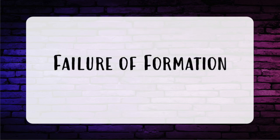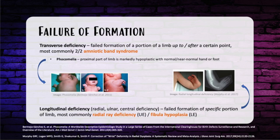Starting with failure of formation — there are two ways you can stop forming. One is transverse deficiency, think congenital hand amputations. The most common site is the proximal one-third of the forearm. Another example is phocomelia, a truncated limb associated with the thalidomide drug. The second group is longitudinal deficiency, related to which bones are missing: radial deficiency, ulnar deficiency, or central deficiency.